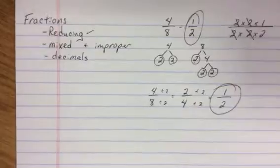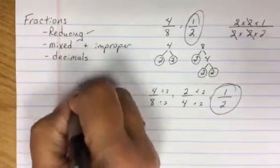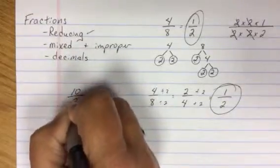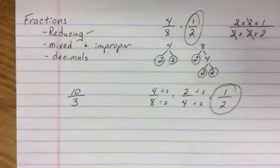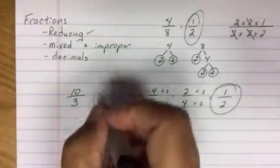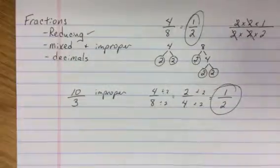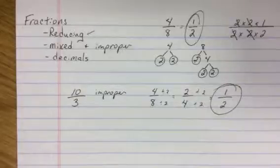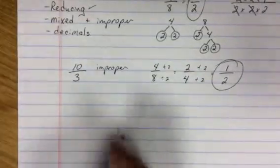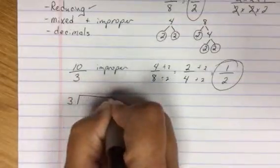Mixed and improper. Well, those two go hand in hand because an improper fraction means the top number or the numerator is bigger than the bottom number or the denominator. This is improper. Now how do I go from improper to mixed? I divide.